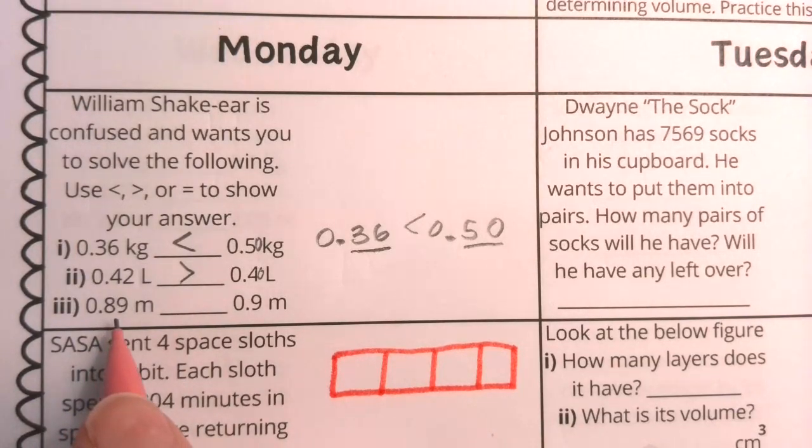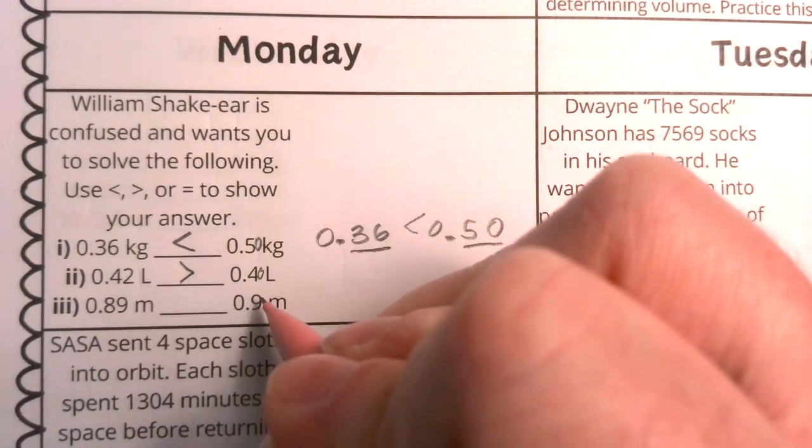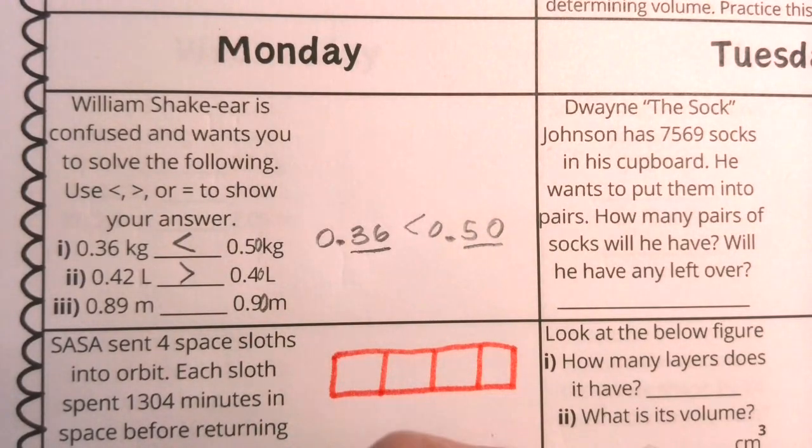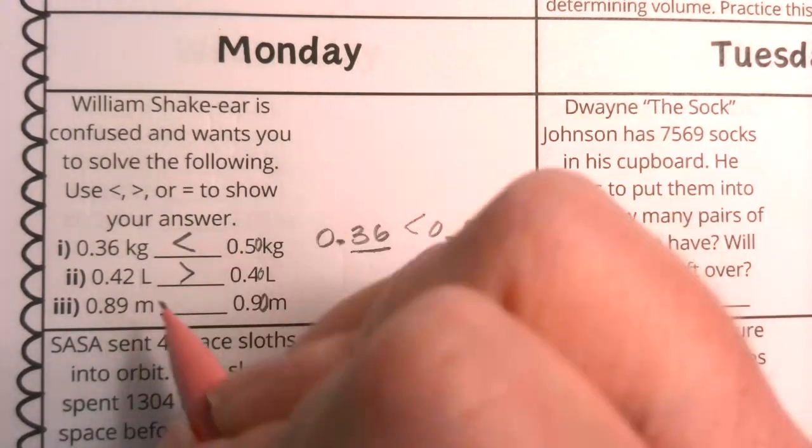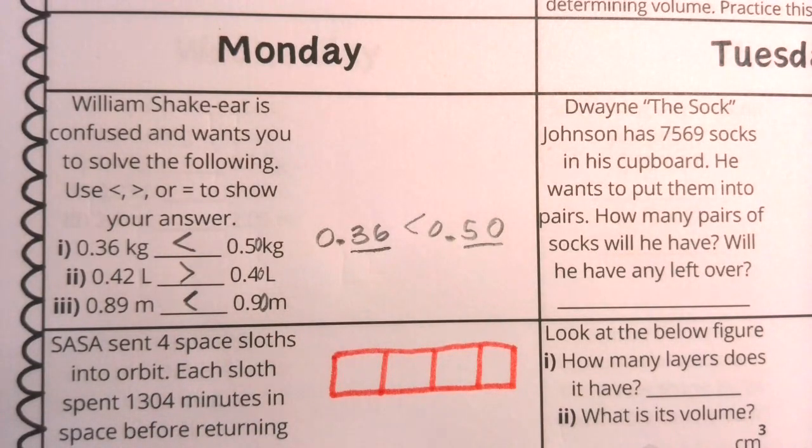Now we have 0.89 being compared to 9 tenths or 90 hundredths, right? Well, 0.89 is just 1 hundredth less than 90 hundredths. That is how those comparison symbols should look in this problem.